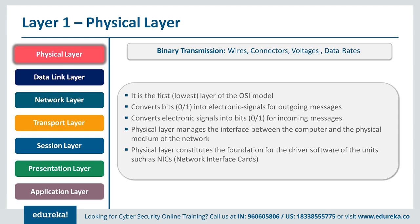The physical layer connects computers and network devices physically. Its purpose is to convert zeros and ones into voltage signals and vice versa — converting what the computer understands into a physical or network form. At this layer we work with wires, connectors, voltage, and data rates. Devices include modems, network interface cards, and hubs. A hub is like a repeater — it connects multiple devices but functions simply as a connector or extension. It's a basic layer 1 device.